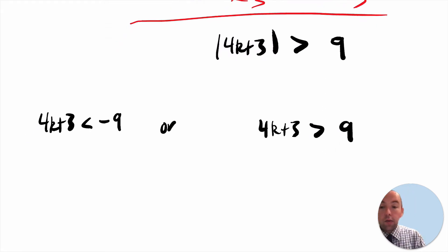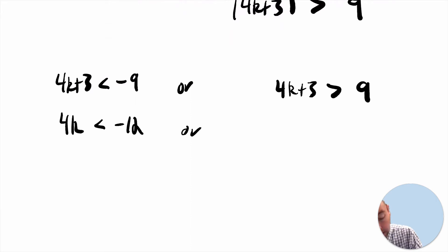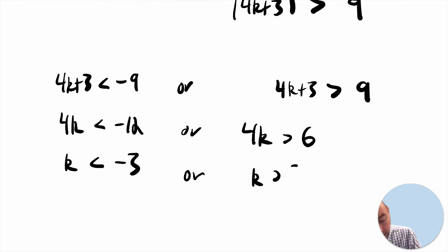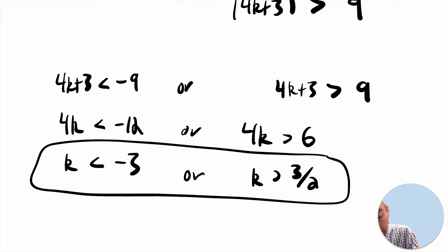We can then solve each of those inequalities. Subtracting 3 first gives us those two inequalities, then dividing by 4. There's no flipping needed since we're dividing by a positive. We end up with the possible values for k.